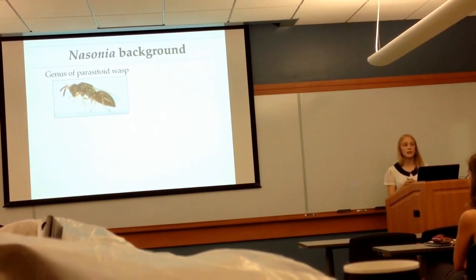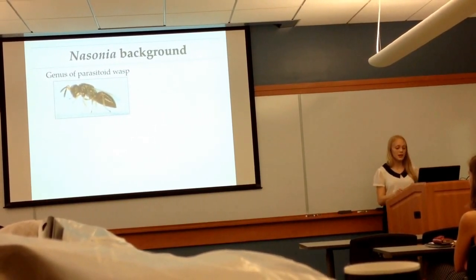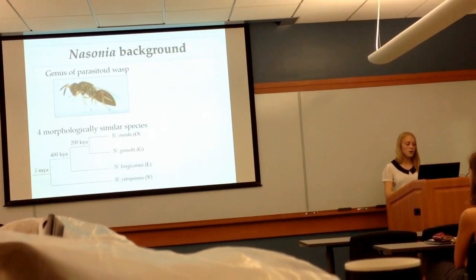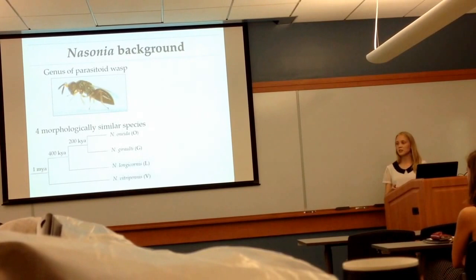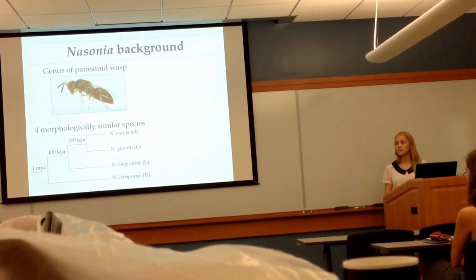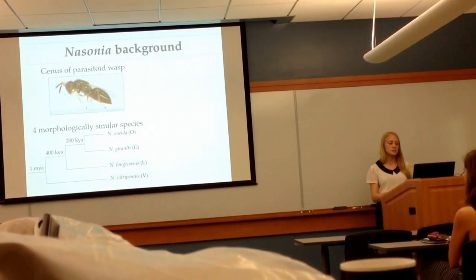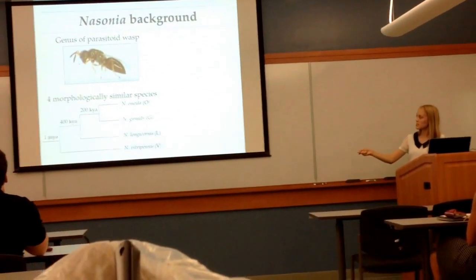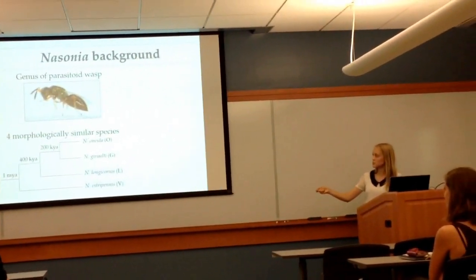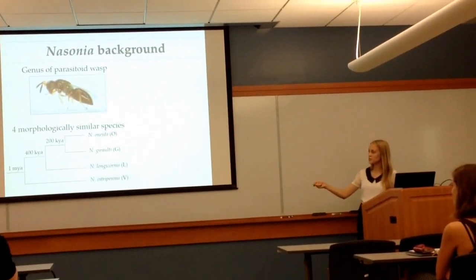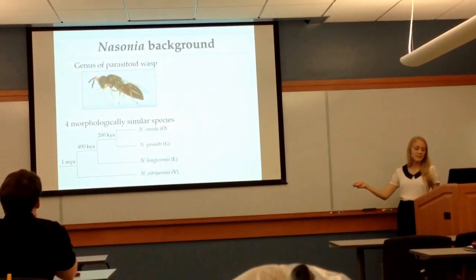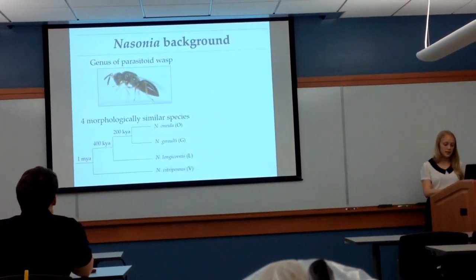The females lay their eggs in the pupae of certain flies. In this genus there are four morphologically very similar species. In my experiments I've been utilizing Nasonia longicornis, abbreviated L, and Nasonia vitripennis, abbreviated V.